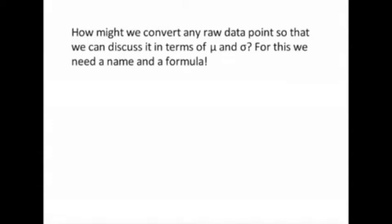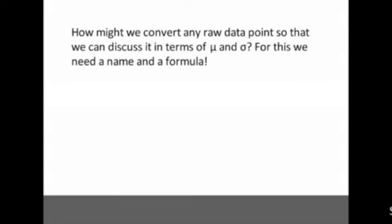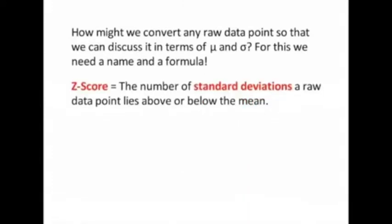One of the things we might ask ourselves is how do we convert any raw data point so that we can discuss it in terms of mu and sigma, remembering that mu is the mean and sigma is the standard deviation. In that last one, we were able to look at the picture. That's good and that's bad. I love the picture, but for some data, the picture is just not very nice. For this, we're going to need a name and a formula. We're going to need something to refer to how many standard deviations a data point lies above or below the mean.